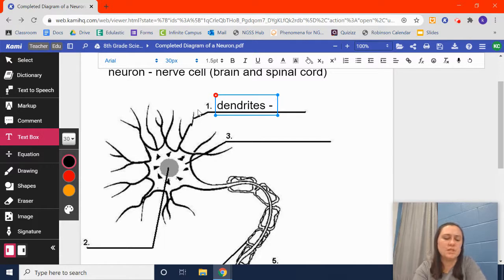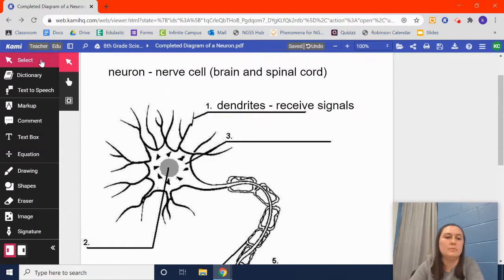And what the dendrites do is they just receive a signal. On the example that I started with, we'll just go with that. My body realizes, or the neuron realizes there's something really, really hot under her finger. So then this dendrite, it receives this signal, and the signal travels through here, and it goes into this little part.